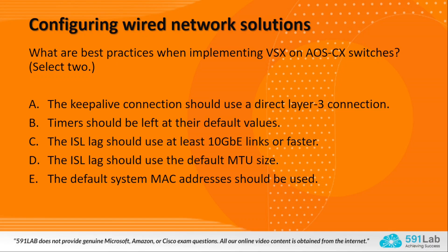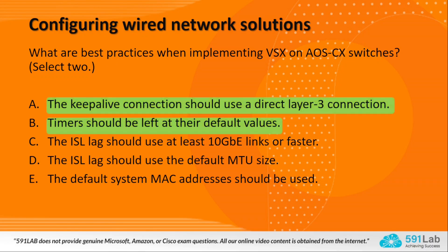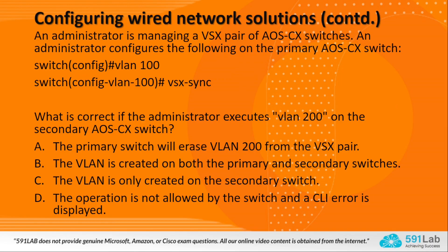Option B: timers should be left at their default values — the white paper says to keep the default timer, so this is also correct. Option C: the ISL LAG should use at least 10Gb links — ISL links should be at least 40Gb, so this is wrong. Option D: the ISL LAG should use the default MTU size — ISL LAG should support jumbo frames, so the default MTU needs to be changed, this is wrong. Option E: the default system MAC should be used — the technical guide says not to use default system MAC and to manually configure it, as it removes dependency on physical hardware MAC. Therefore, the correct answers are Option A and B.